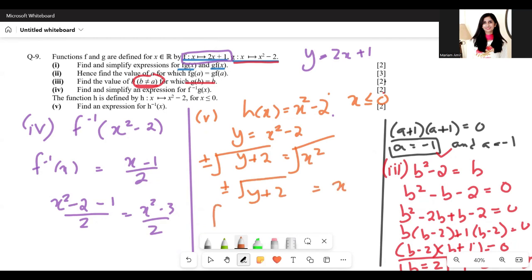And when we write h inverse of x, we will only use the negative sign. So we're going to write negative square root of (x plus 2).